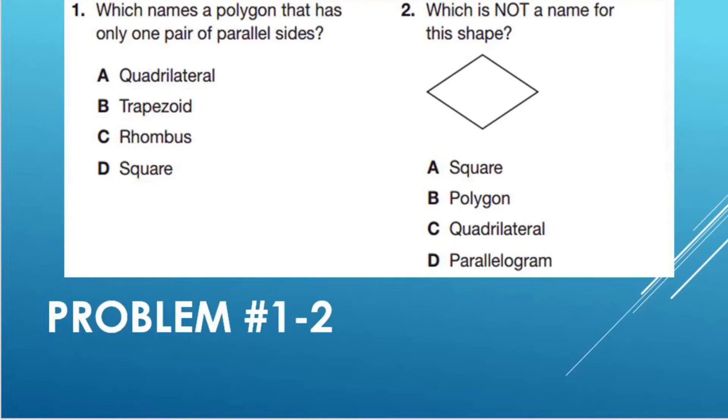Number two reads, which is not a name for this shape? A: square, B: polygon, C: quadrilateral, D: parallelogram. As you begin trying to answer these questions, go back to the flowchart if you need to remind yourself of the characteristics.